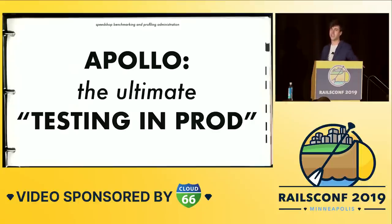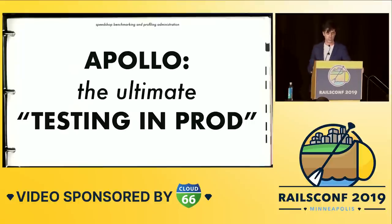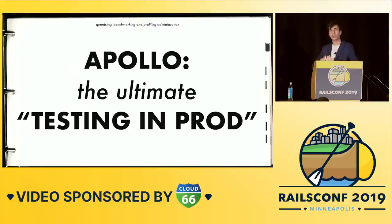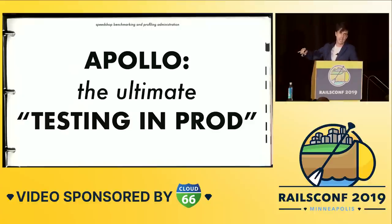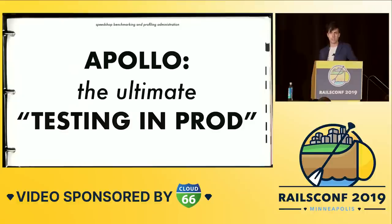I'm sure everyone here has never had some super wacky thing take down their application in production. The story of the 1202 program alarm reminds us that no amount of performance work outside of the production context will always catch every single performance bug. One of the main objections I get when I teach people about benchmarking and profiling is they don't like that the perf bug has to happen first in production before we can replicate it on their machines in development. They'd rather do load testing and try to find these things before they happen. But as the Apollo story shows us, load testing is not reality. Simulation is not reality. Only reality is reality.